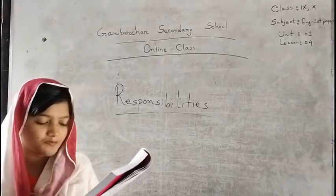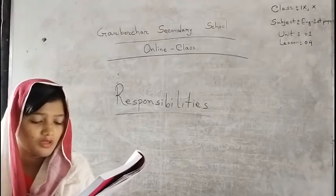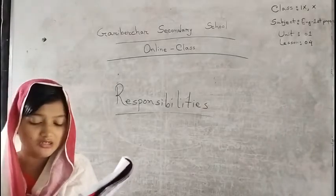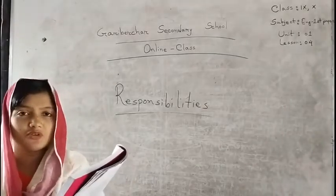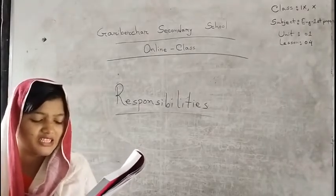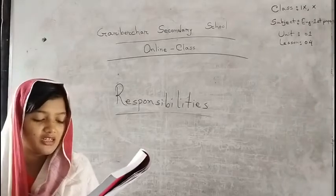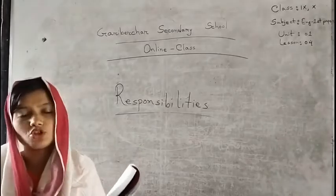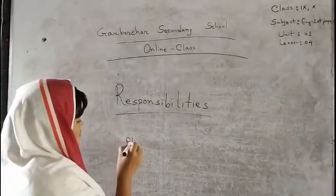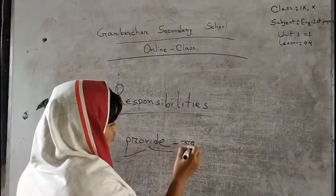These are your responsibilities. But there are responsibilities of the government as well. Our government has the responsibility to provide for its citizens the basic necessities of life, including food, clothing, shelter, education and medical care.